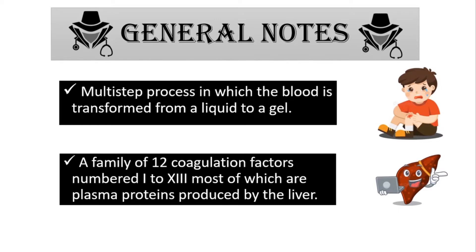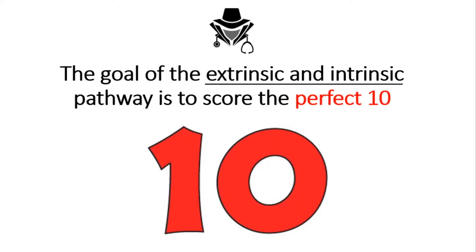Now let's start with the steps of the coagulation pathway. We have generally an intrinsic and an extrinsic pathway. The intrinsic pathway is initiated by something from inside the body, while the extrinsic is initiated by something external. Think of both pathways as wanting to score the perfect 10.